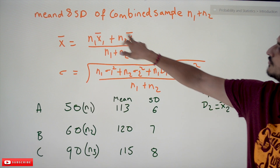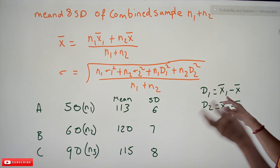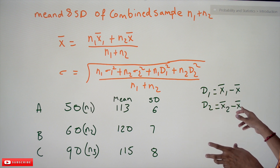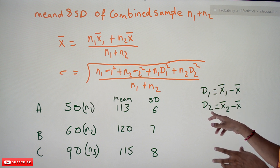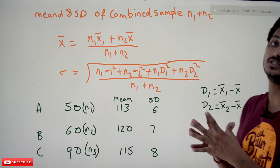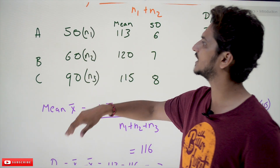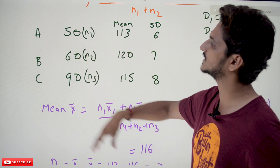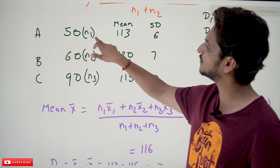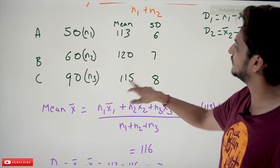Here x̄ is the combined mean of both samples. d₁ = first sample mean minus total mean; d₂ = second sample mean minus total mean. This is the equation to find the standard deviation for the combination of two samples. Let's take an example: three distributions A, B, C are provided, each with n₁ = 50, n₂ = 60, n₃ = 90 data points, means 113, 120, 115, and given standard deviations.